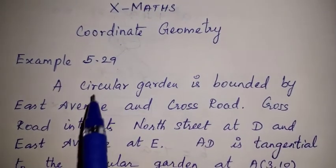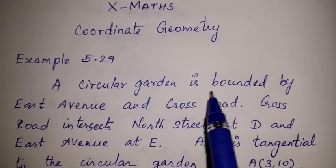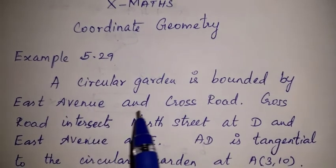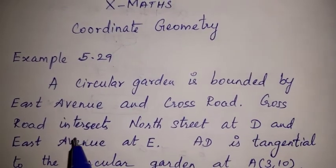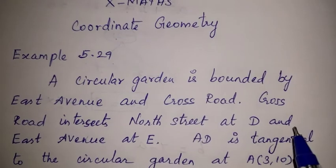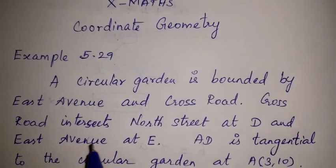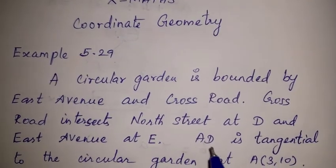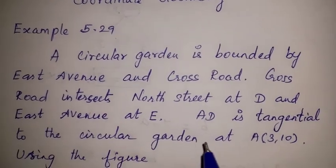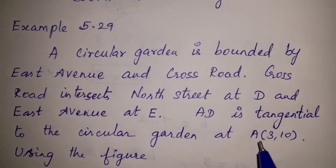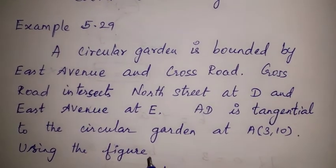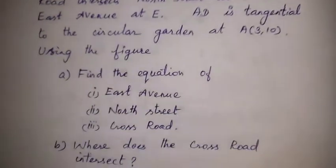A circular garden is bounded by East Avenue and Cross Road. Cross Road intersects North Street at D and East Avenue at E. AD is tangential to the circular garden at point A(3,10). Using the figure, answer the questions.